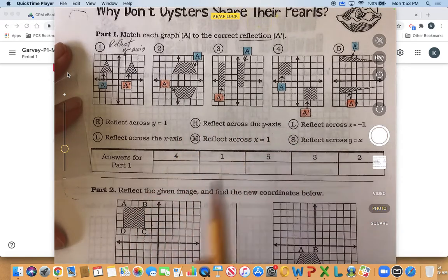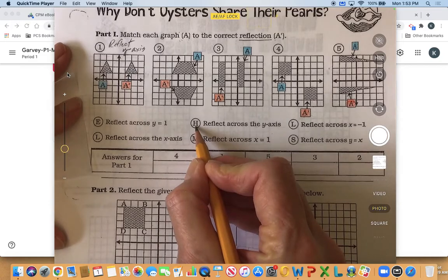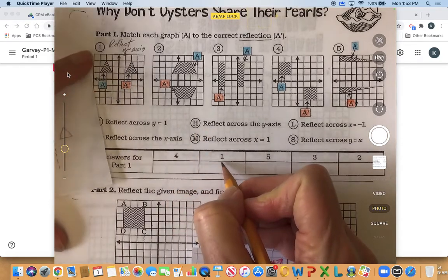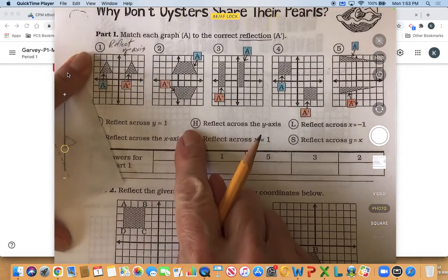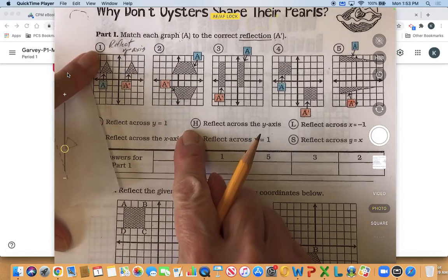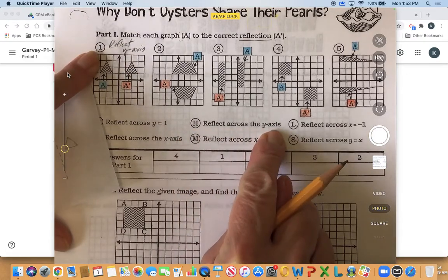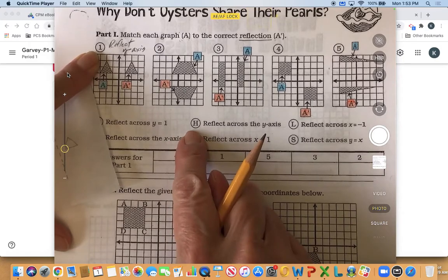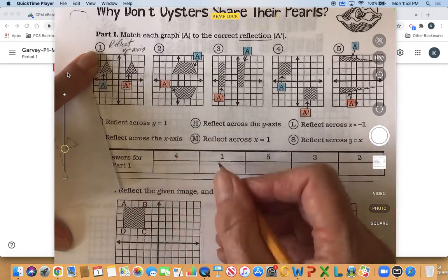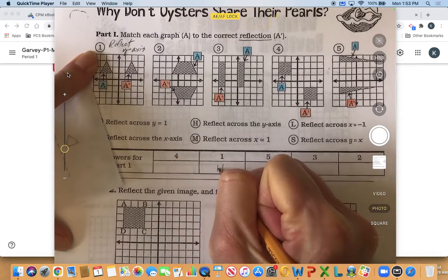Okay and so that's for one and here's one down below and let me see, oh here it says reflect across the y-axis and that's an H so I put the H underneath the one. Okay so for graph one we reflected across the y-axis and so that means one is H and so I'm just going to put H right here.